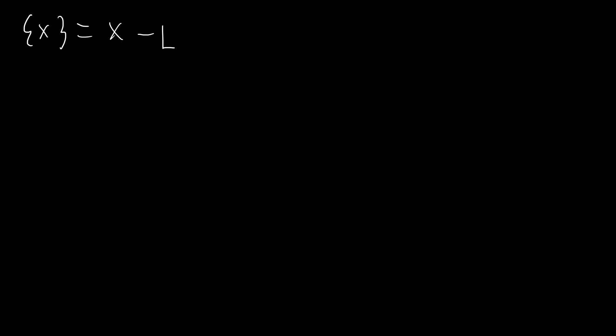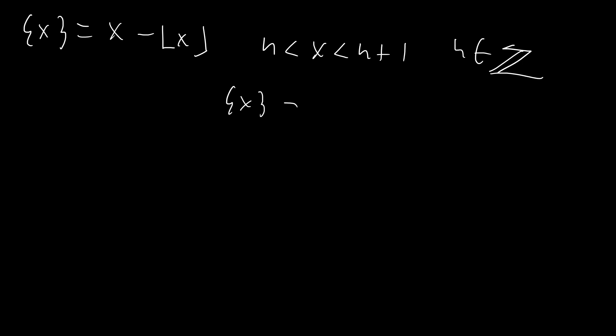First I'm going to go through a bunch of series that we're going to need in order to evaluate these integrals. The curly brackets represent the fractional part function, which represents everything except the integer part of x. This is equal to x minus floor of x. For any x that is an integer, the fractional part of x is zero. If x isn't an integer, it's just x minus the next integer below it. When x is between n and n plus 1, the fractional part of x is x minus n. We're going to use that a lot to split up our integrals.